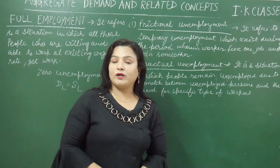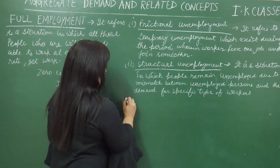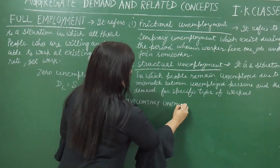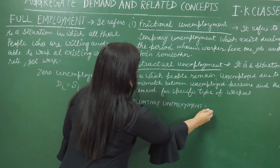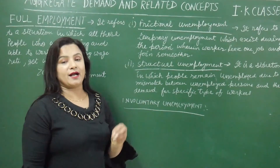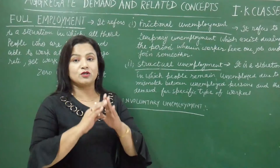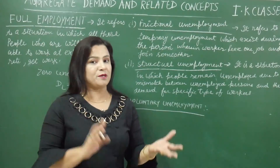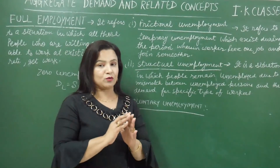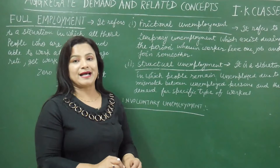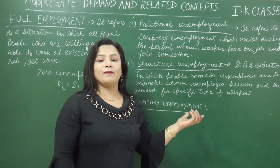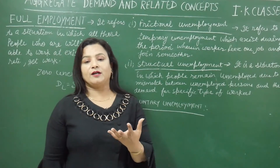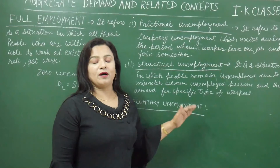Now we are doing involuntary unemployment. Involuntary unemployment is a type of situation in which all people who are willing and able to work at the existing wage rate but don't get work. This is the opposite of full employment situation. People are rendered unemployed against their wishes. Involuntary unemployment is considered while estimating total unemployment in the economy.